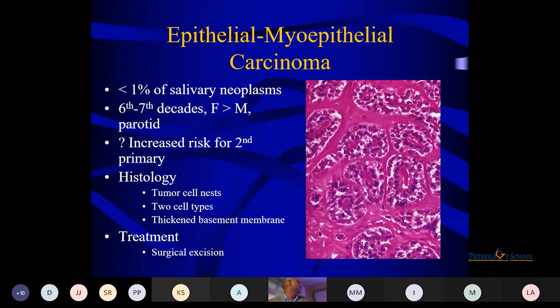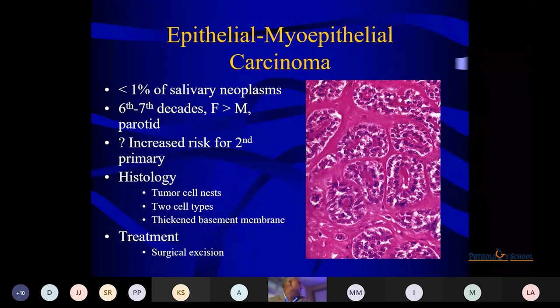Epithelial-myoepithelial carcinoma is rare — 1%, seen in the 6th–7th decades with females more than males. It has two cell types: inner luminal cells and outer myoepithelial or basal cells. A thickened basement membrane is a characteristic feature.